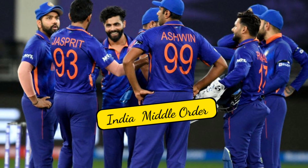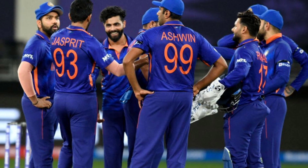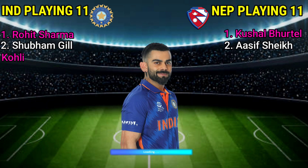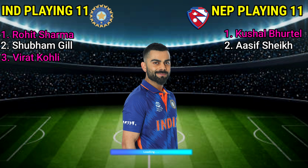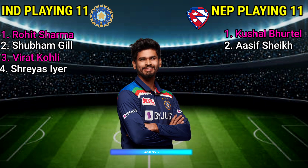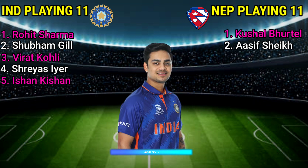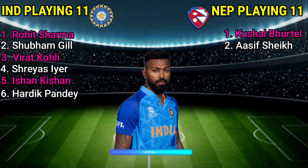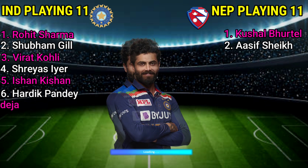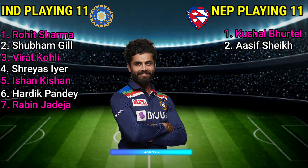India team middle order. No. 3: Virat Kohli, right-handed batsman. No. 4: Shreyas Iyer, right-handed batsman. No. 5: Ishan Kishan, wicket-keeper batsman. No. 6: Hardik Pandya, all-rounder. No. 7: Ravindra Jadeja, all-rounder.